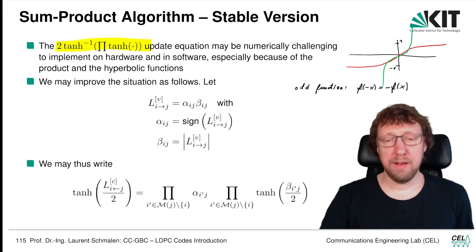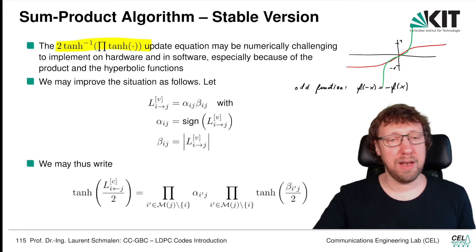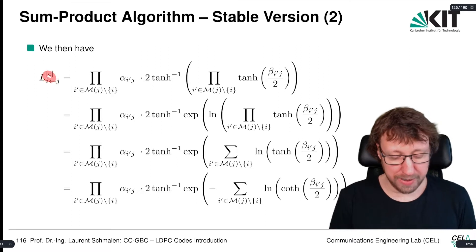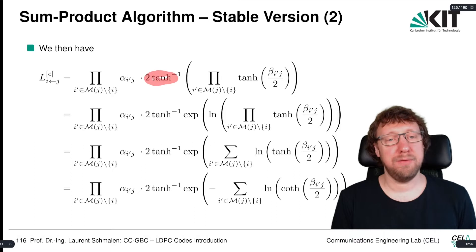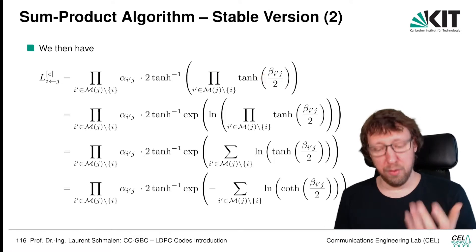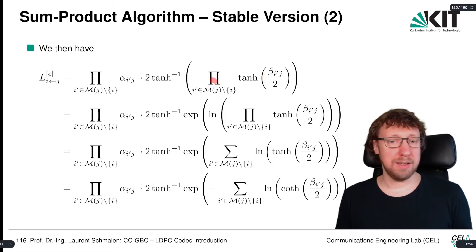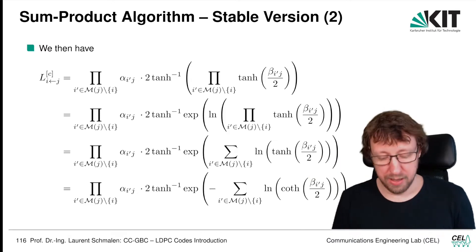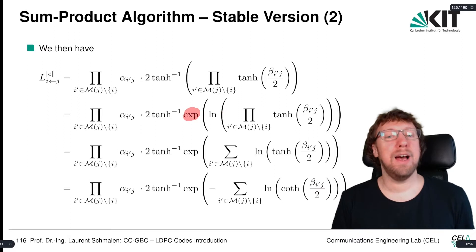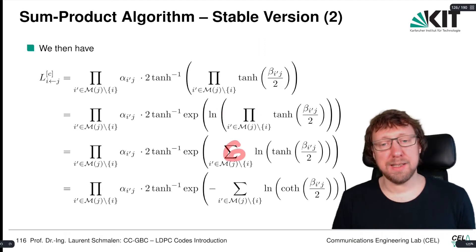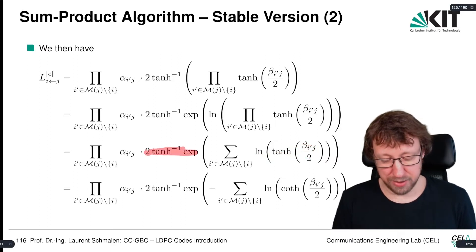Let's see how we can simplify the expression. We start with the check node outgoing message: it's the product over the signs times two times inverse hyperbolic tangent times the product of the hyperbolic tangents of the magnitudes divided by 2. Now we want to get rid of this product. We add a logarithm — but we also need to undo the logarithm, so we add an exponential as well. The log of a product becomes the sum of log of hyperbolic tangents, and we have two times the inverse hyperbolic tangent times the exponential.